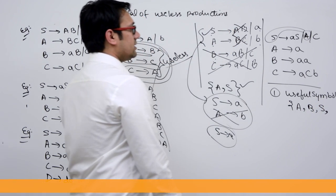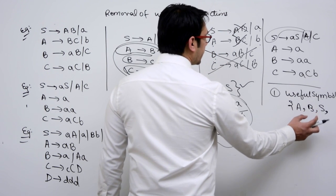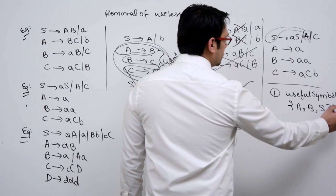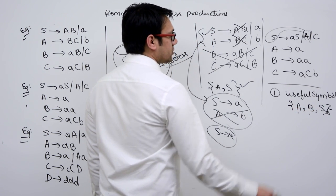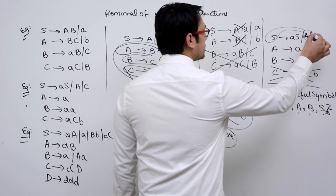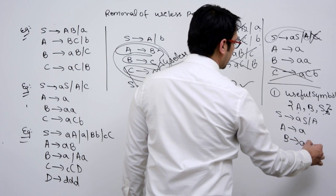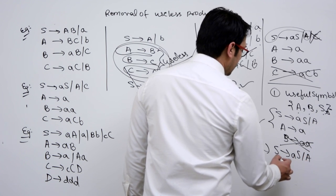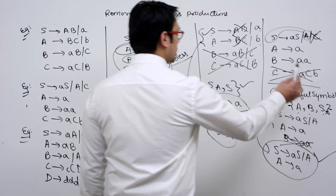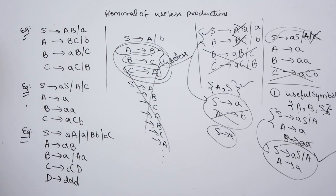The start symbol will almost always be a useful symbol, since without it you cannot do anything. Now, is there anything else made up of A, B, and S? There is nothing. So these are the useful symbols. All productions not made up of A, B, and S are removed. Remove the production with C and any reference to C. We get: S derives AS or A, A derives small 'a', and B derives A. From this, B is an unreachable symbol, so we remove it. The final grammar is: S derives AS or A, and A derives small 'a'. This is the simplified grammar.